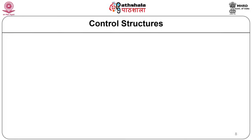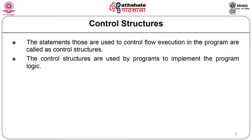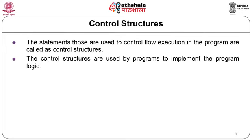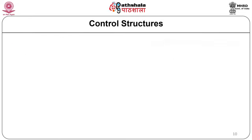Control structures are statements used to control the flow of execution in a program and are used by programs to implement program logic. In general, there are three types of control structures: sequence structure, selection structure, and loop structure.